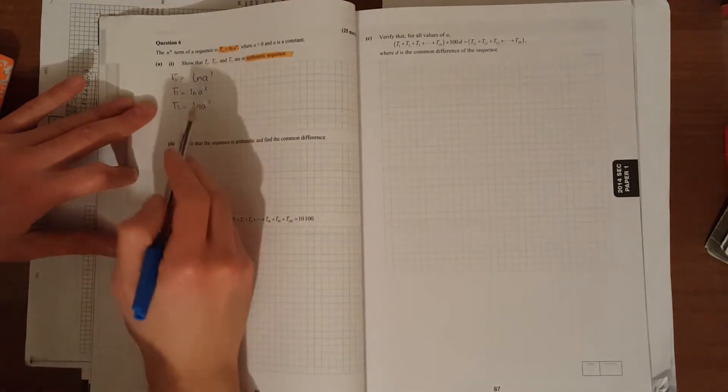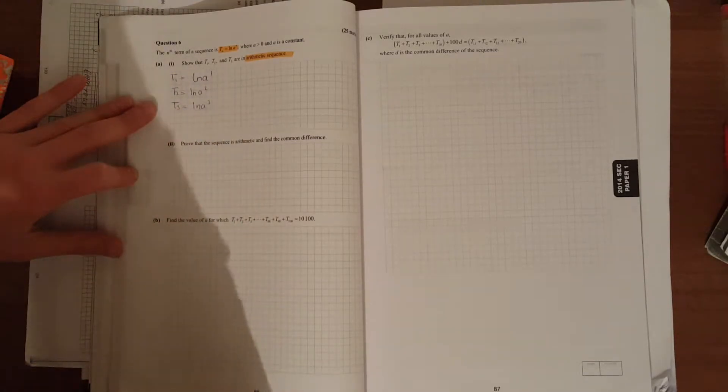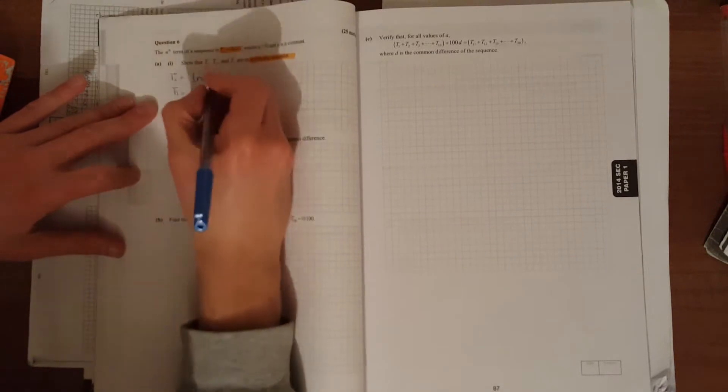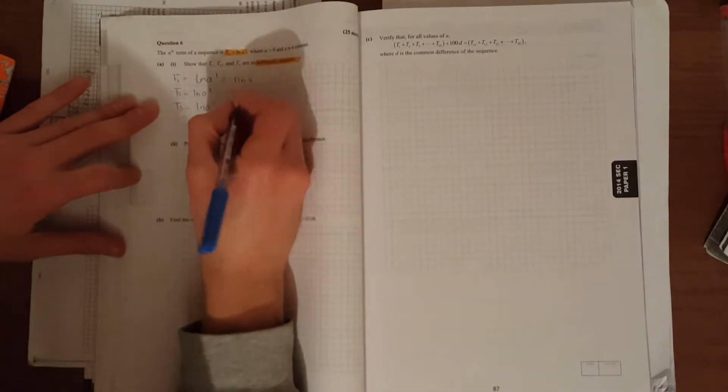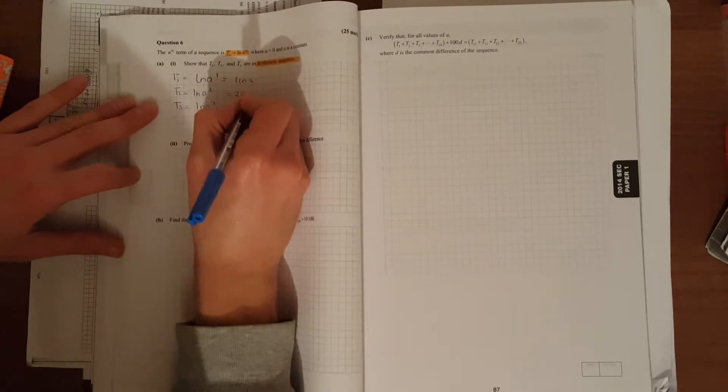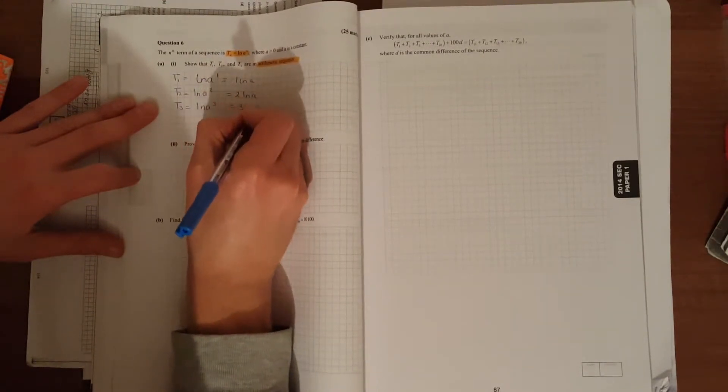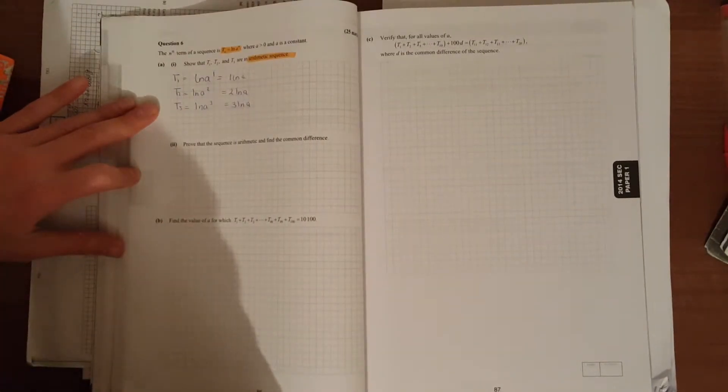With your powers, remember ln is just log to the base e. When they're logs, simply bring down the power in front of it. So you have 1·ln(a), 2·ln(a), 3·ln(a). To show they're a linear sequence, they're going to have the same first difference.